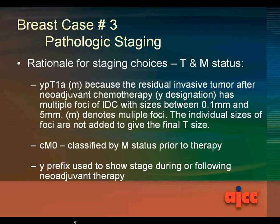The rationale for the staging choices for T and M: YPT1A(m) because the residual invasive tumor after neoadjuvant chemotherapy — the Y designation — has multiple foci of infiltrating duct carcinoma with sizes between 0.1 millimeter and 5 millimeters. The M denotes multiple foci. The individual sizes of foci are not added together to get the final T size. Clinical M0 is classified by the M status prior to therapy. The Y prefix is used to show the stage during or following neoadjuvant therapy.